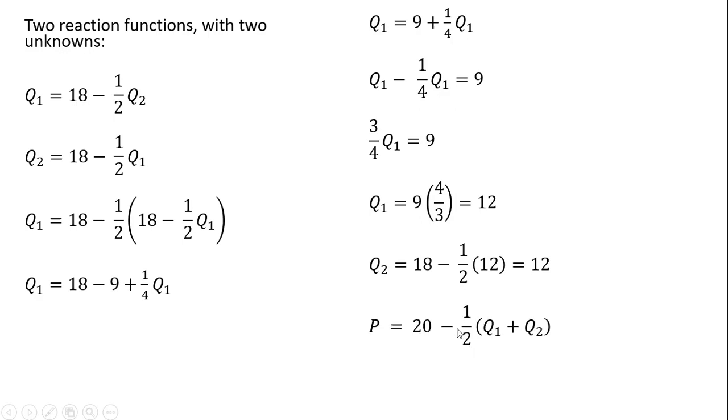In terms of the market price, going back to our market inverse demand, we're just going to evaluate it at firm 1 and firm 2's output. So plugging in 12 for firm 1's output and 12 for firm 2's output, we see that the market price is $8 per unit. Okay, that's it. I hope you found this video helpful.